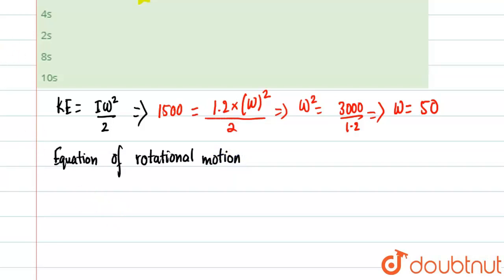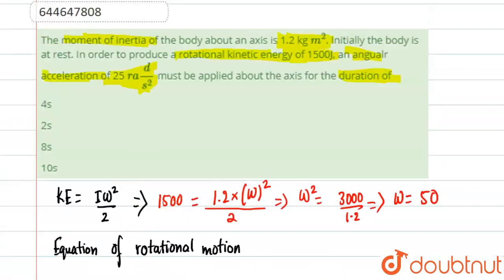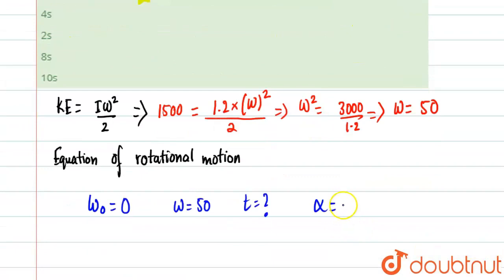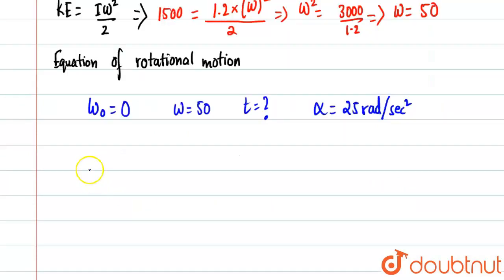What is the equation of rotational motion we are going to use? First, everything was given in the question. Omega naught, which is initial angular velocity, was 0. Omega was found to be 50. t we need to find, and acceleration alpha is given as 25 radians per second square.